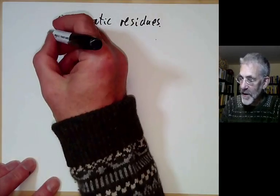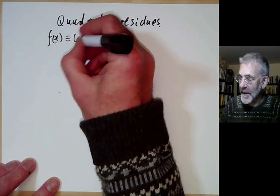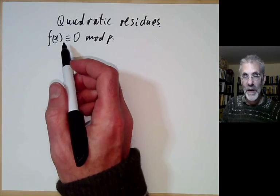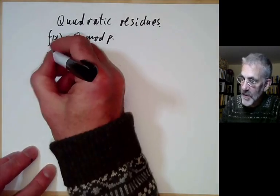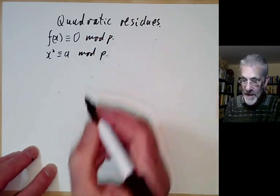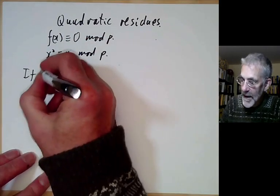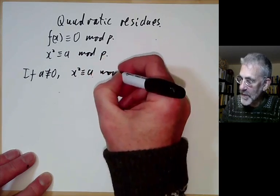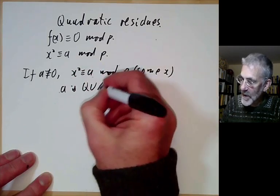Quick background: we're trying to study solutions of polynomials f(x) ≡ 0 mod p. Degree one polynomials follow easily from Euclid's algorithm, and degree two polynomials can easily be reduced to the question of whether x² ≡ a mod p has a solution. If a is not zero and x² ≡ a mod p for some x, we say a is a quadratic residue.